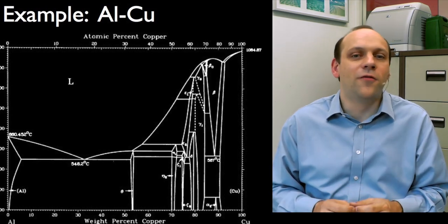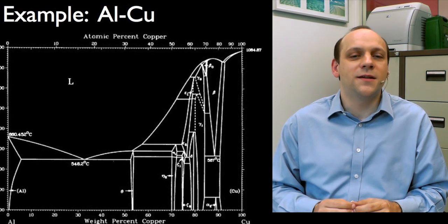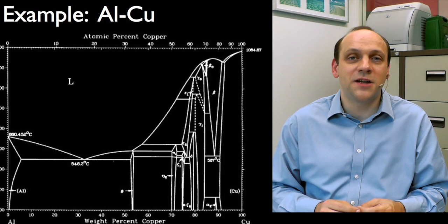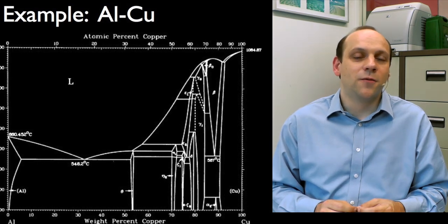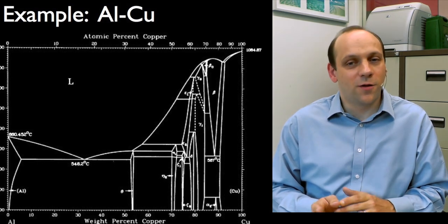So here's an example of a phase diagram with a number of intermetallics in it. This is aluminium copper, and we'll look at aluminium copper quite a bit. It's the foundation for a lot of aluminium alloys. We've got an aluminium phase. We've got a liquid phase. We've got a pure copper phase.